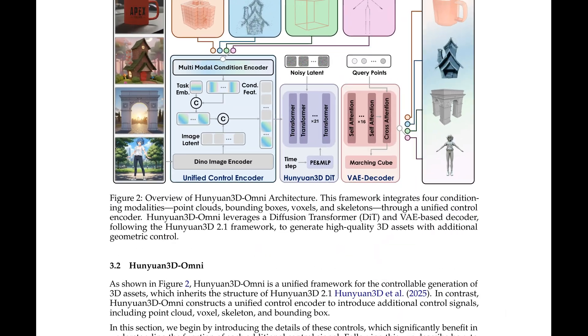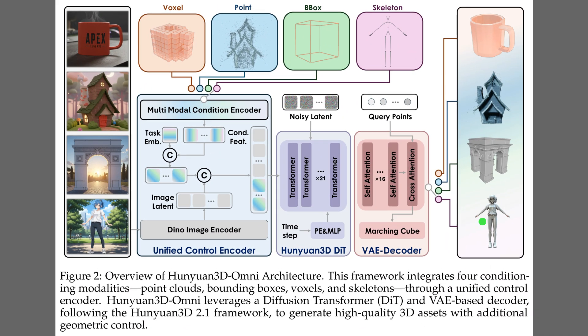Figure 2 shows how the system routes different controls through one unified control encoder, then uses a diffusion transformer and a 3DVAE decoder to synthesize the asset. The unified control encoder fuses image features with point, voxel, box, or skeleton inputs, which means creators can steer geometry and pose directly.